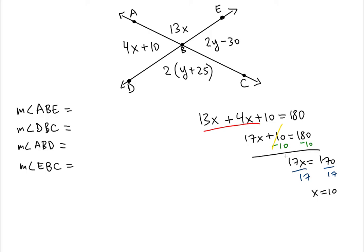So if the value of x is equal to 10, this angle would be 13 times 10, so that means 130 degrees for ABE. So this is 130 degrees. Now this one would be 4 times 10, so that would give you 40 plus 10. So ABD is 50 degrees.